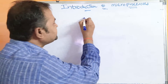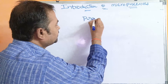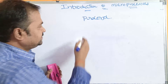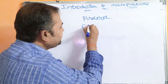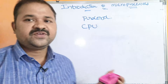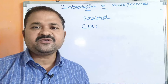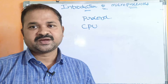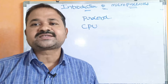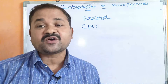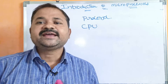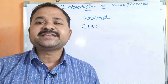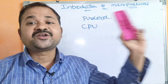Microprocessor means processor. So, processor can also be called as microprocessor, which means CPU — Central Processing Unit. What is the major task of CPU? What is the purpose of a microprocessor? Any program in the computer is executed by the microprocessor.